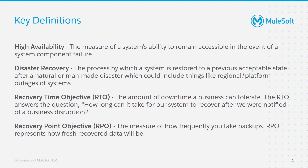First, we have high availability and disaster recovery. Often these two terms are used interchangeably, but they absolutely have different definitions. High availability refers to a system's ability to remain accessible in the event of component failure. In other words, if one piece of the system goes down, does the entire system have the capability to remain accessible, or will the entire system be inaccessible?